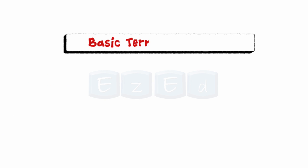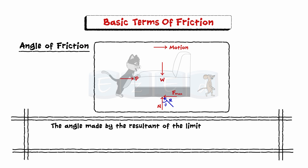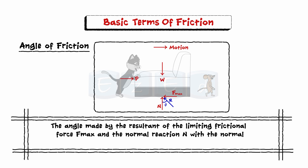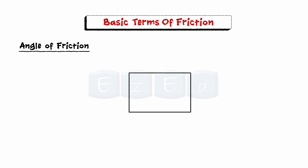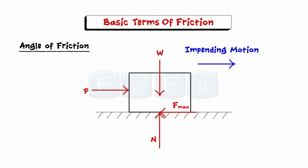Now let's take a look at the basic terms of friction. Angle of friction: the angle made by the resultant of the limiting frictional force F_max and the normal reaction N with the normal reaction is called the angle of friction. Consider a block of weight W on a horizontal surface with an applied force P acting on the block. Let N be the normal reaction. If the block is on the verge of impending motion, the frictional force F_max will be acting on the block. Let R be the resultant of F_max and N, making an angle phi with the normal reaction — here phi is known as the angle of friction.